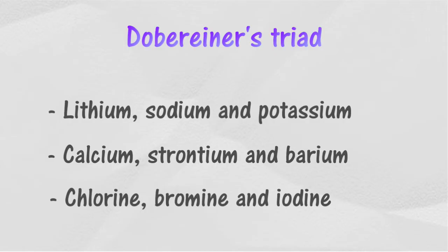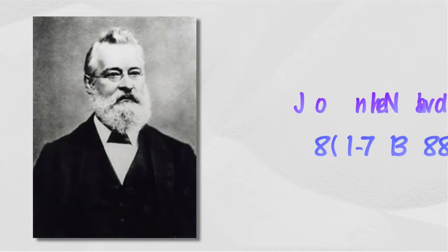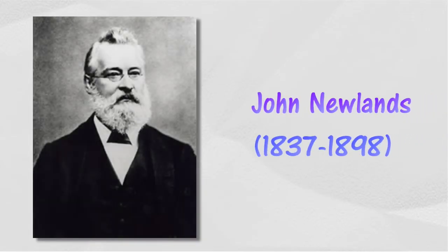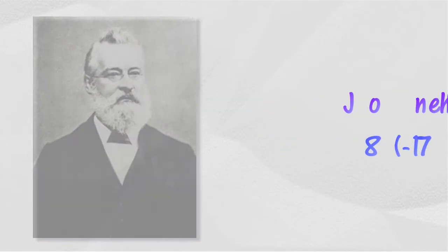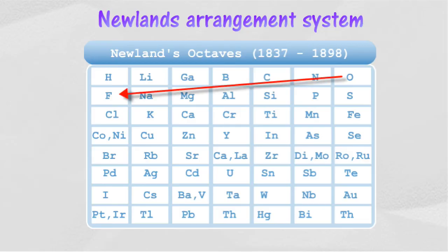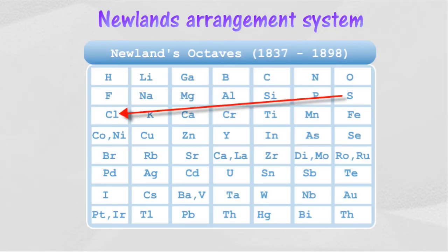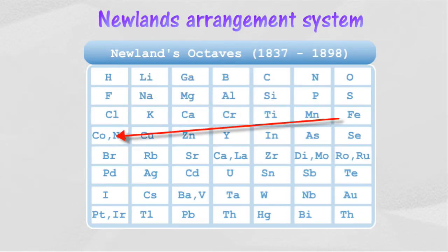John Newlands arranged all elements known at that time according to the order of increasing atomic mass. He observed that characteristics which are similar repeat at every eighth element.